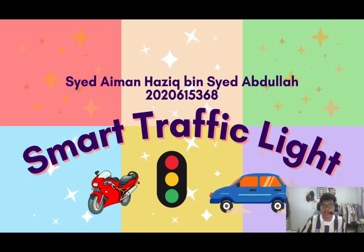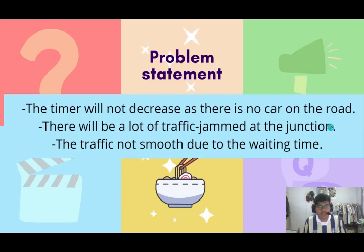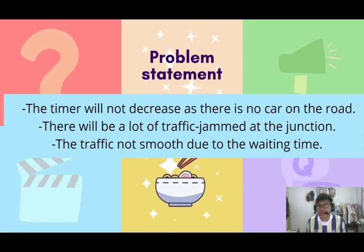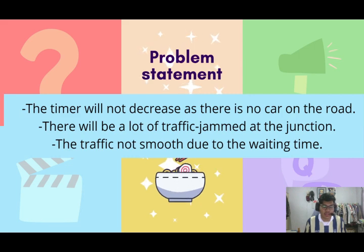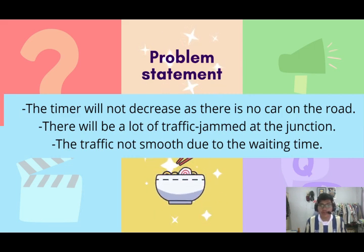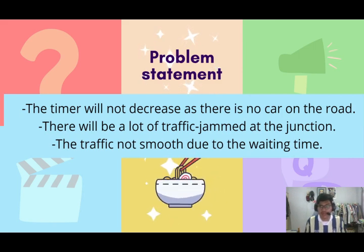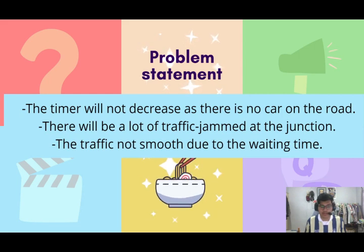The problem statement is that the timer will not decrease when there is no car on the road. So people will spend more time waiting at the traffic light even with no cars, leading to a lot of traffic jams at the junction. Traffic flow is not smooth due to the waiting time, causing more cars to wait for the green light.